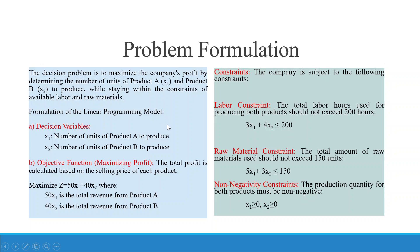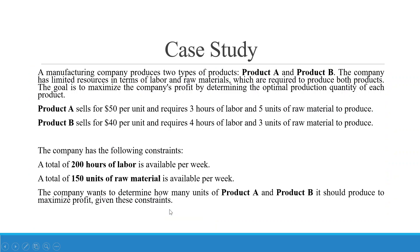Formulation of the linear programming model: Decision variables — x1 is the number of units of Product A to produce, x2 is the number of units of Product B to produce. Objective function — to maximize profit: Maximize Z = 50x1 + 40x2, where 50x1 is the total revenue from Product A and 40x2 is the total revenue from Product B.